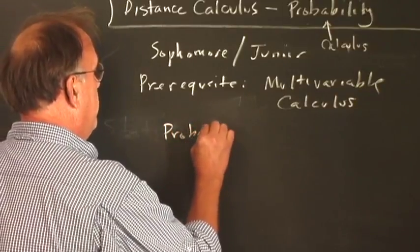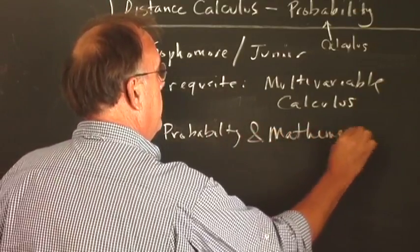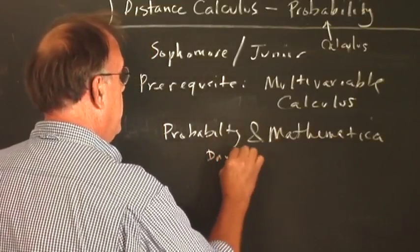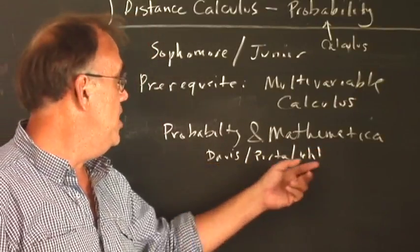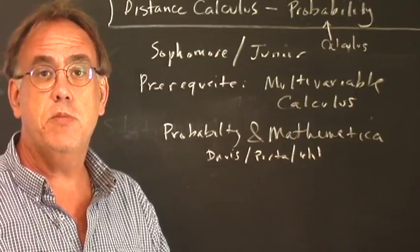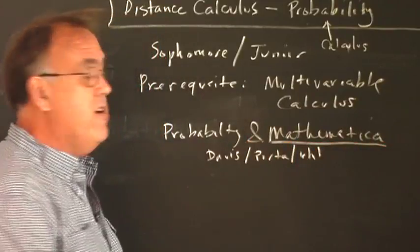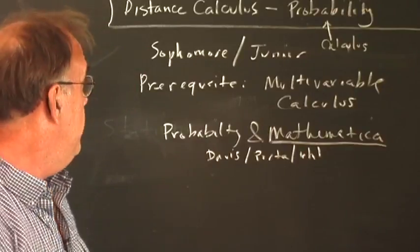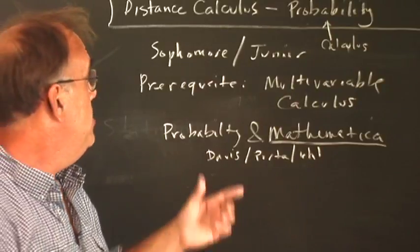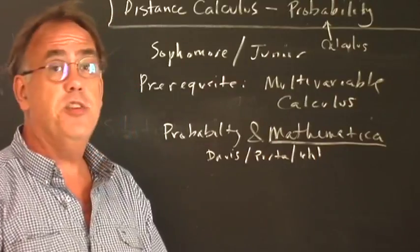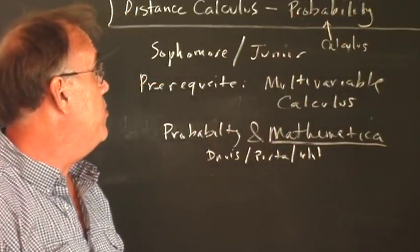The curriculum that we use is a text called Probability and Mathematica. And it's by the team of Davis, Porta, and Yule - Davis from the Ohio State University and Porta and Yule from the University of Illinois at Champaign-Urbana. This curriculum uses Mathematica very strongly. In fact, it is the tool of choice. And this is meant to be a course for sophomores or even juniors in college. And it is a very challenging course. It is using calculus really as an application to the topics in probability theory.